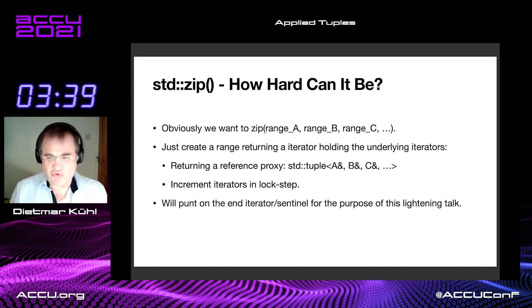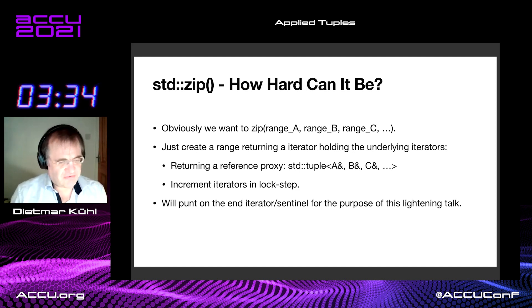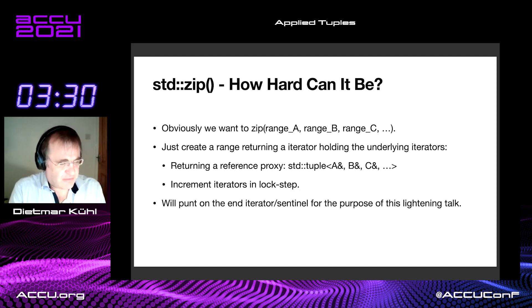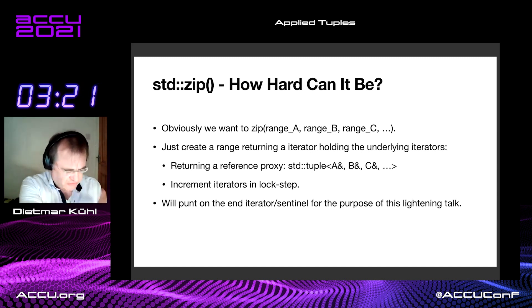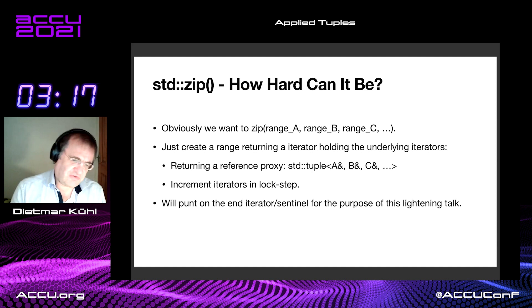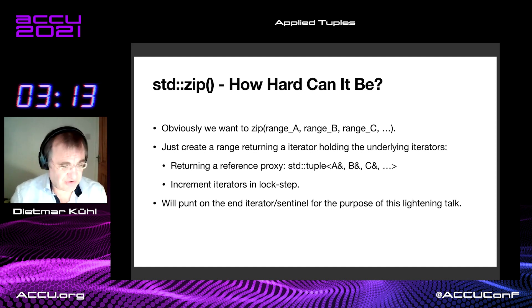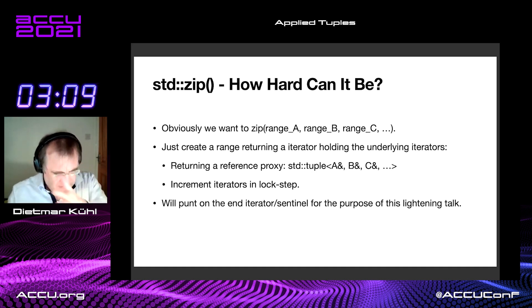Zip — how hard can it be? First off, zip being two ranges is boring. Zipping N ranges is way more useful, obviously. So all we do is create a range, and if you call begin, you get an iterator which holds all the iterators of the underlying ranges. And if you dereference that, it gives you a tuple of references. And if you increment something, the iterators move in lockstep.